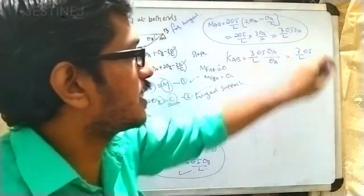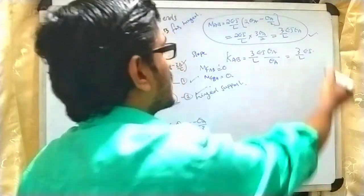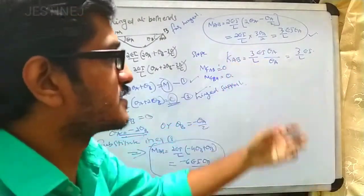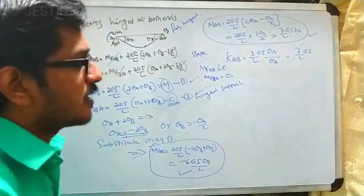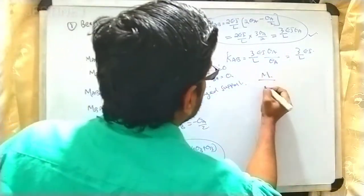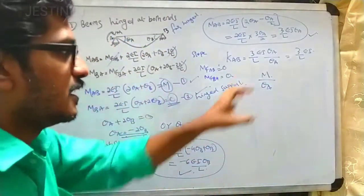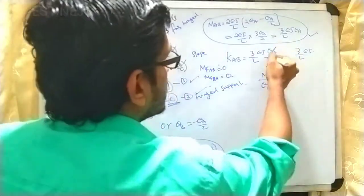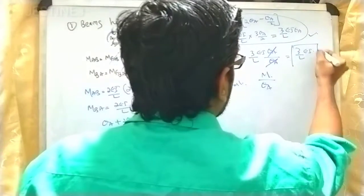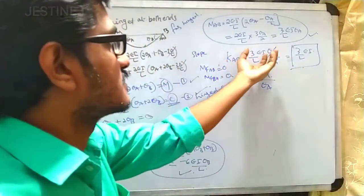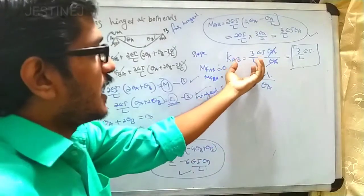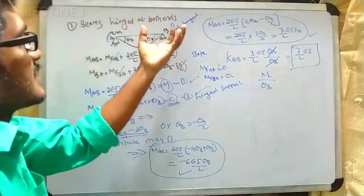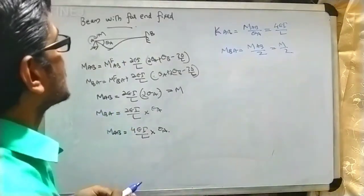Stiffness is defined as the applied moment to the unit rotation. So if we apply unit rotation at θ_a, the stiffness K_AB = M/θ_a = 3EI/L. This is the stiffness value when the beam is hinged at both ends.